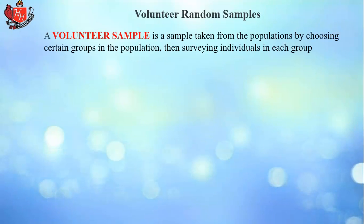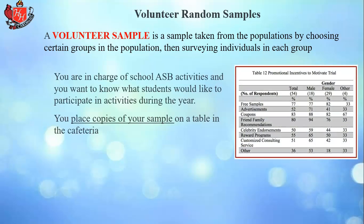The issue with a volunteer sample — like placing copies of a survey on a table in the cafeteria — is that it's not a particularly good method. People may not take it seriously, may make mistakes, or may not understand how to complete it properly. That's really probably the poorest way to do a sample.